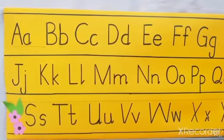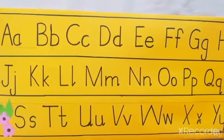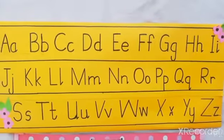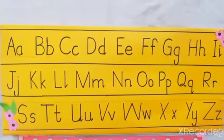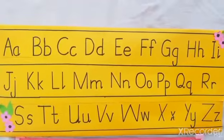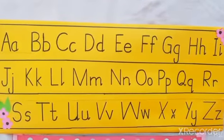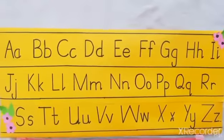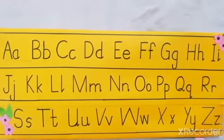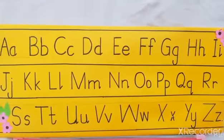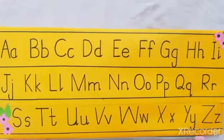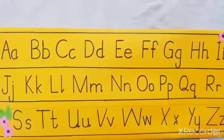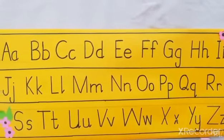Let's start the ABC rhyme. A B C D E F G H I J K L M N O P Q R S T U V W X Y Z. Happy, happy I shall be. Learn my, learn my ABC. Next time you will sing with me.